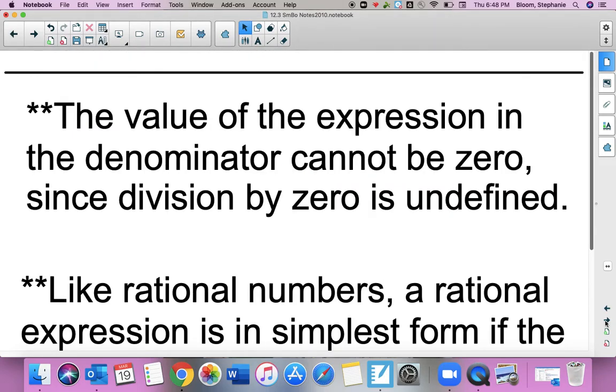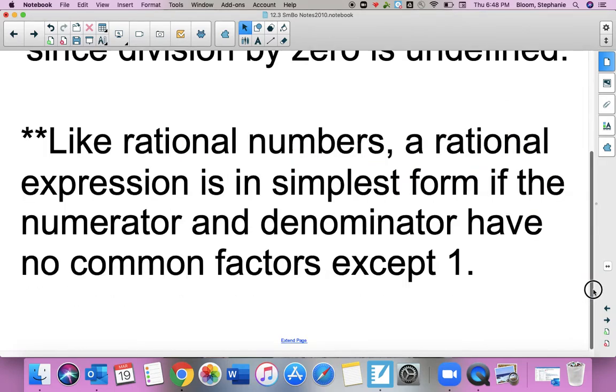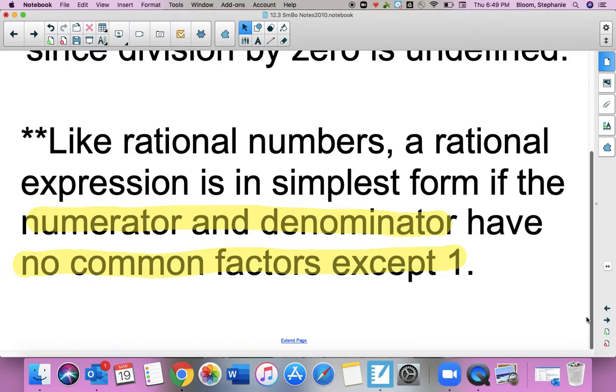A couple of things that we have to make sure of: number one, we know that our denominator cannot be 0 ever, so we can't divide by 0. And we also know, like rational numbers, a rational expression is going to be in simplest form when the only common factors it has is a 1. So no common factors left except a 1 in your numerator and denominator, and that's how you know you are done.